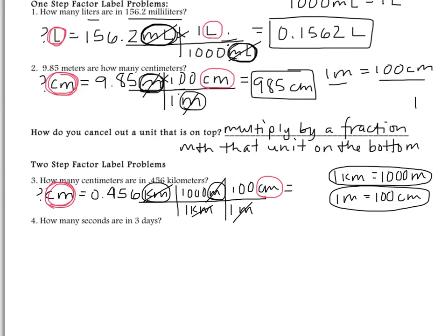The math: 0.456 times 1,000 times 100, divided by one twice on the bottom — but dividing by one doesn't change the answer. The final answer is 45,600 centimeters, which I box.